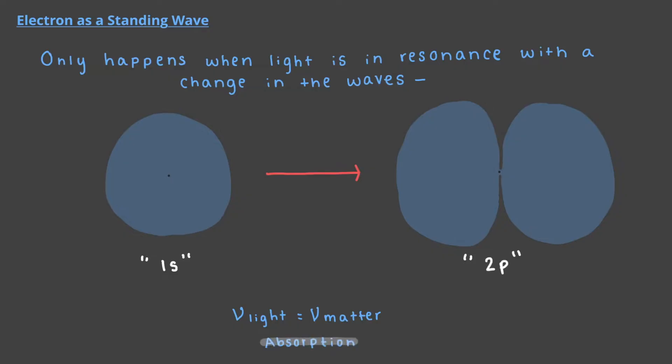But what are 1s and 2p electrons, and what do these numbers and letters represent? In this video, we are going to be focusing on the numbers, which is a characteristic of the electron wave. It is important to understand characteristics of the electron wave so we understand how light is transforming it. Let's investigate.